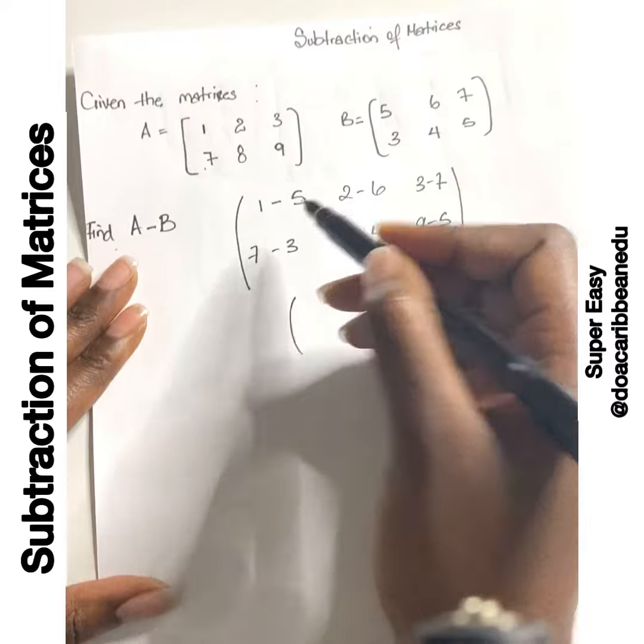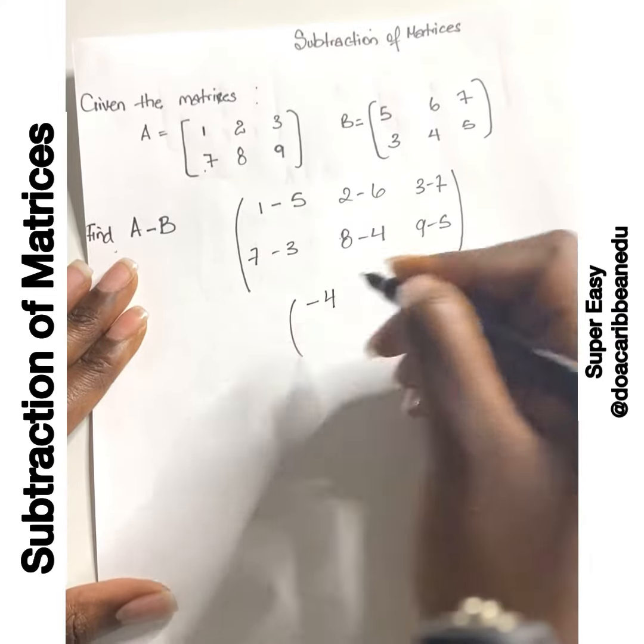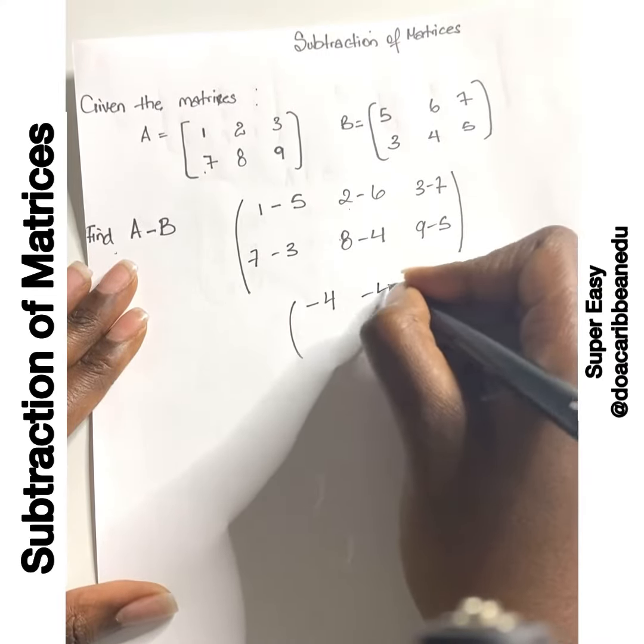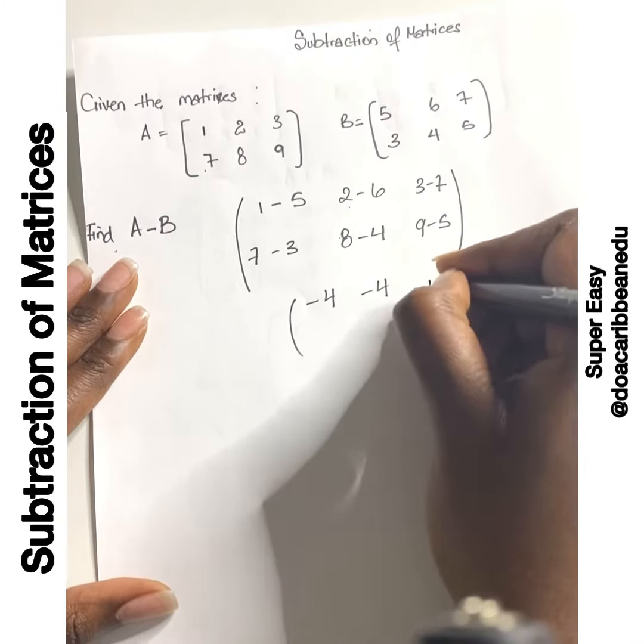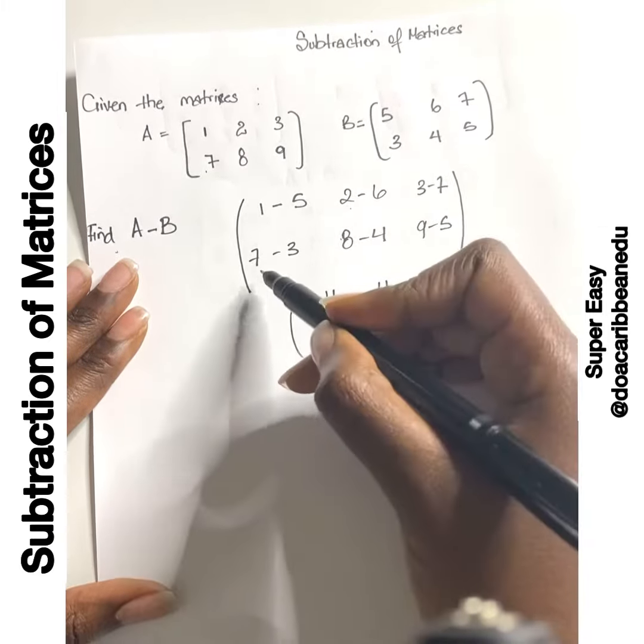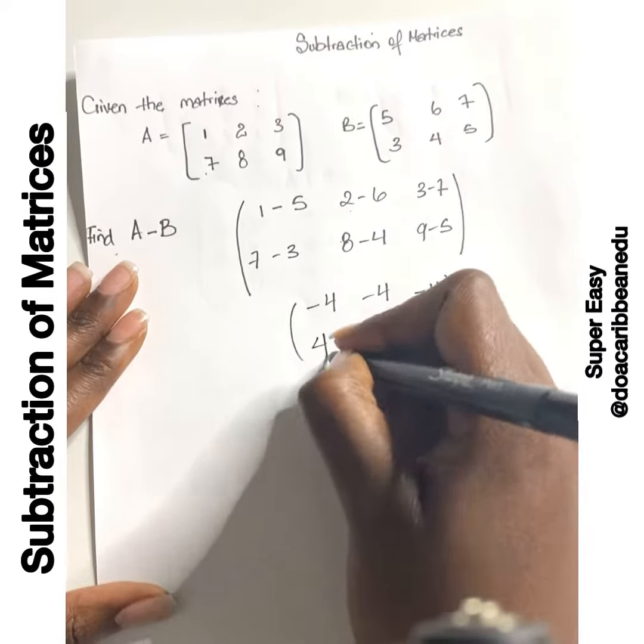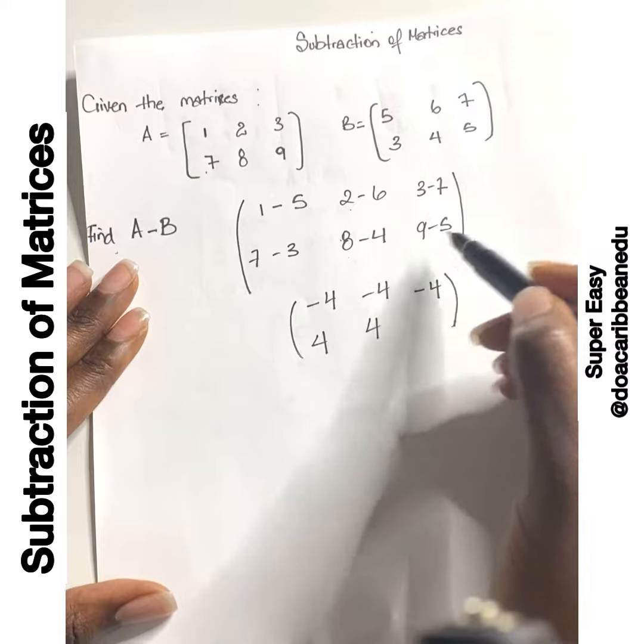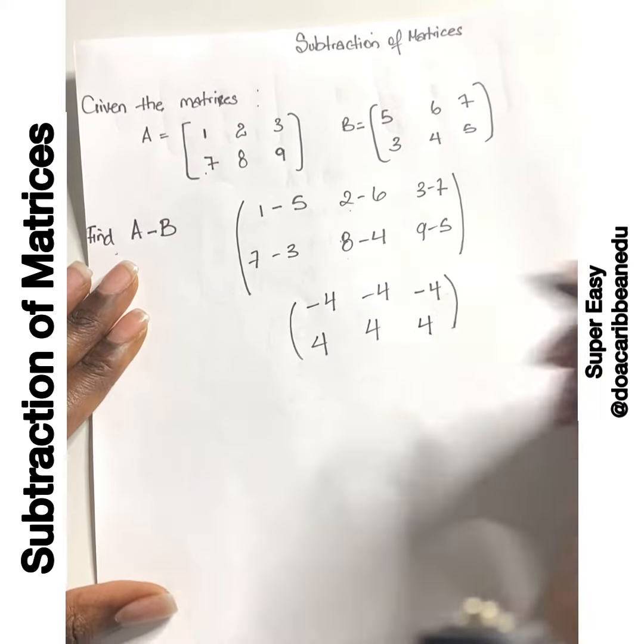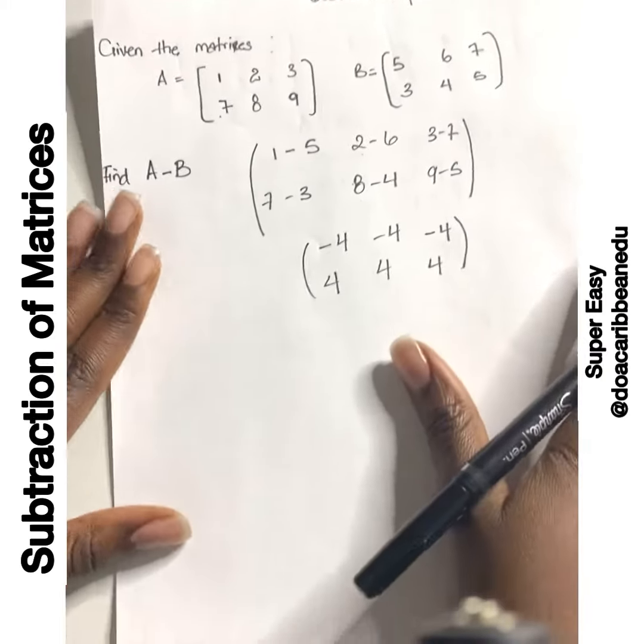1 minus 5 is negative 4. 2 minus 6 is also negative 4. 3 minus 7 is also negative 4. 7 minus 3 is 4. 8 minus 4 is 4. And 9 minus 5 is 4.